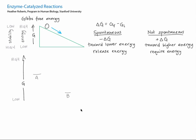As an analogy, think about a marble on an uneven surface. The height of that surface represents free energy. The higher the surface, the higher energy the marble, and the less stable it is, because if it could, it would roll downhill. The marble starts at point A, with some free energy G initial, or GI.